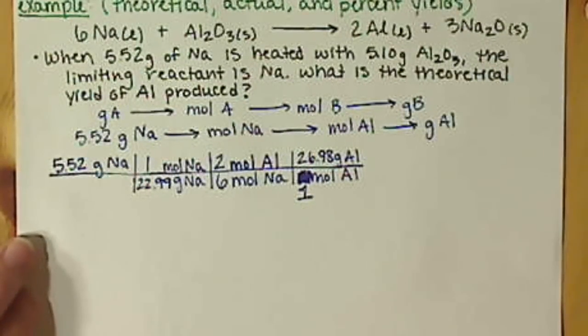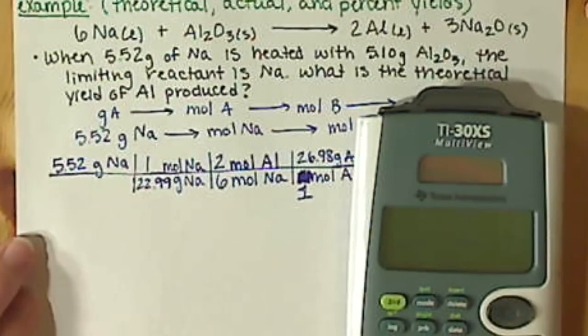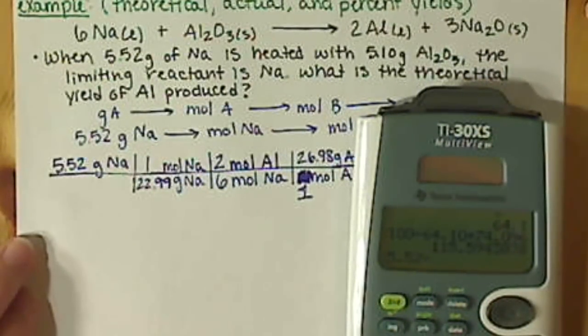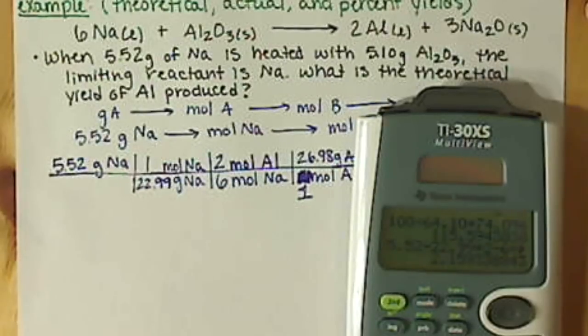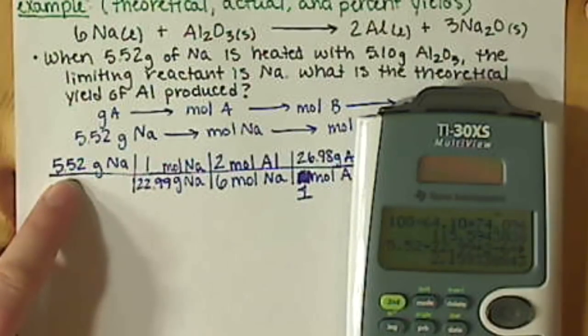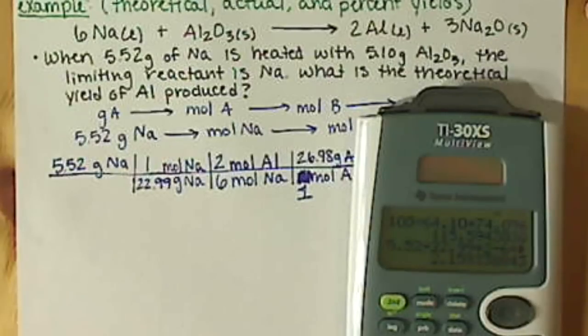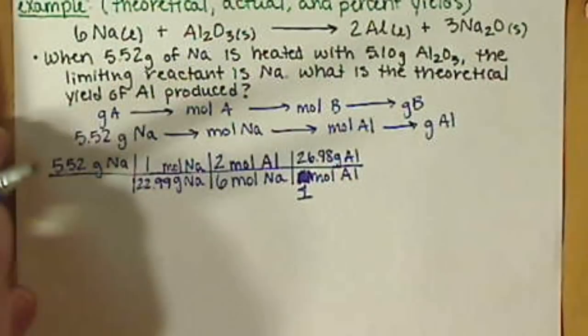So, plug these values into our calculator. We have 5.52 divided by 22.99 times 2 divided by 6 times 26.98. And our calculator spits out 2.1593388 and so on and so forth. We have 3 sig figs in our starting value. So, we want 3 sig figs in the answer. So, I have 2.16 grams of aluminum.